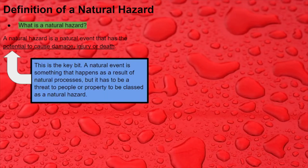I've underlined this bit because it's very important. We've mentioned 'natural event' — that's simply something that happens as a result of natural processes. But to make it a natural hazard, it has to be a threat to people; it has to have the potential to cause damage, injury or death to people.